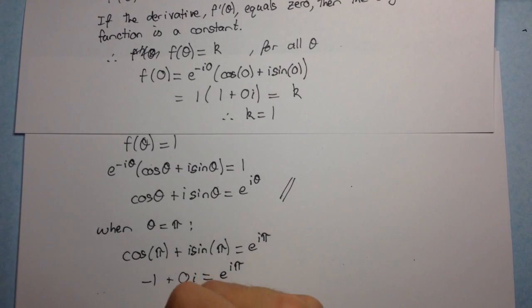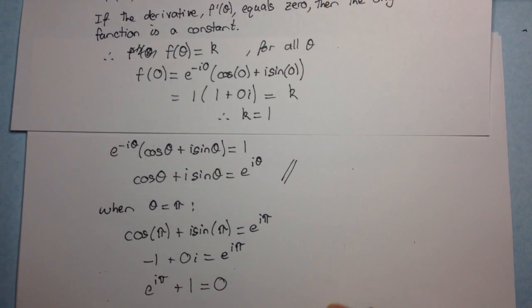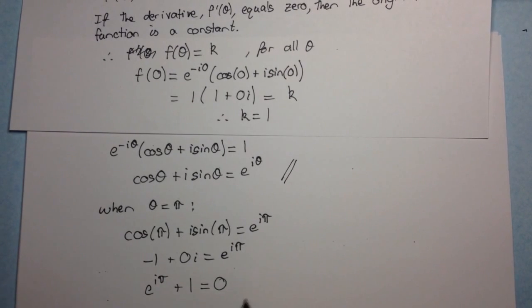If you add one to both sides, you get the amazing e to the i pi plus one is equal to zero. This is widely regarded as the most beautiful identity in maths, because it includes the five most fundamental numbers that we use in most of our maths all into one identity. It's wrapped up into one nice relationship.